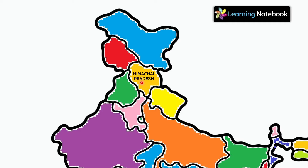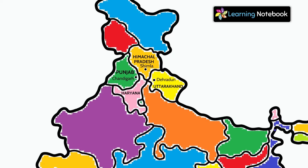This state is Himachal Pradesh and its capital is Shimla. This is Punjab and its capital is Chandigarh. This state is Uttarakhand and its capital is Dehradun. This is Haryana and its capital is also Chandigarh.